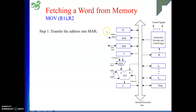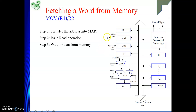The second step: once I have given the address, I need to tell the memory to give me the data — that is the read signal. Then, once we tell memory to give us something, memory cannot give it instantly because it is a slower component compared to the processor. So the processor has to wait until data comes from memory. During that time, the processor waits for the MFC signal from memory. Once memory gives MFC, data has already arrived, and it comes into MDR.